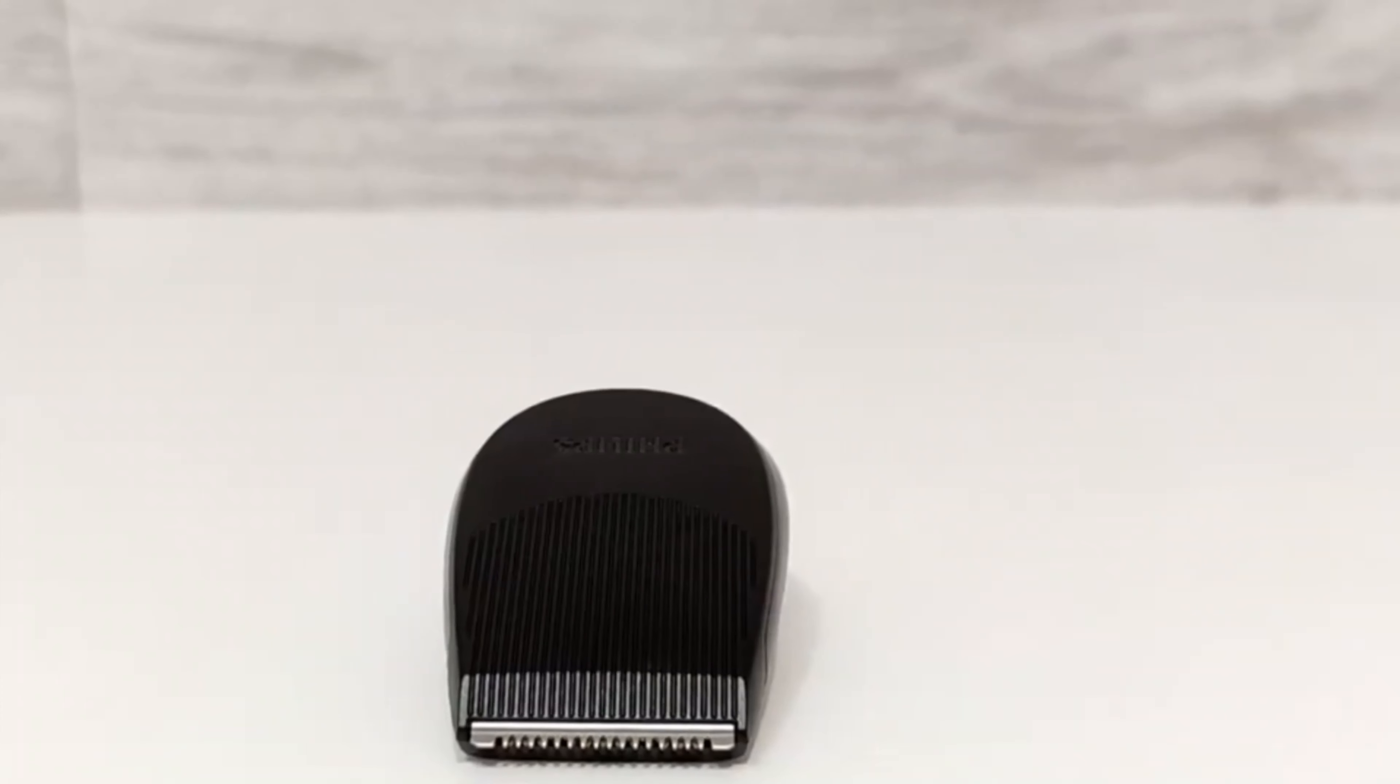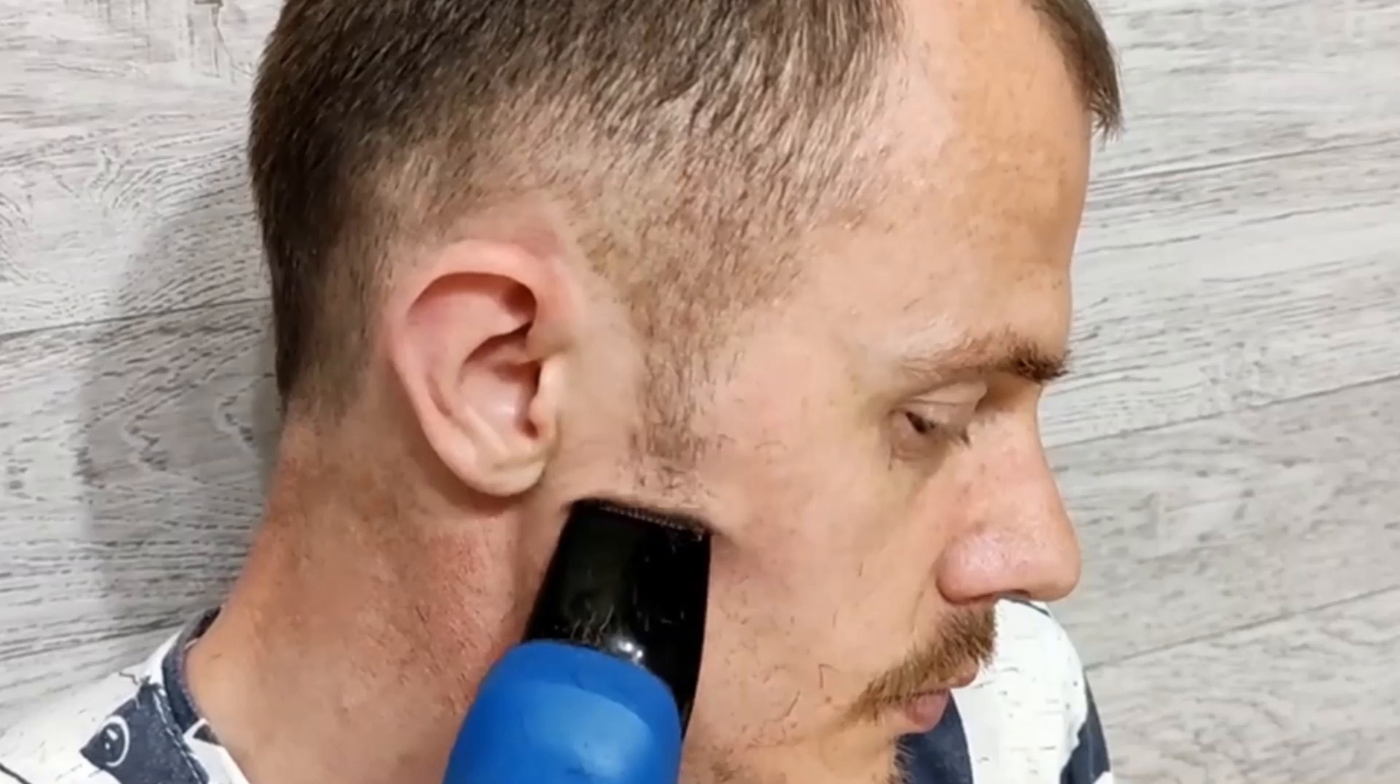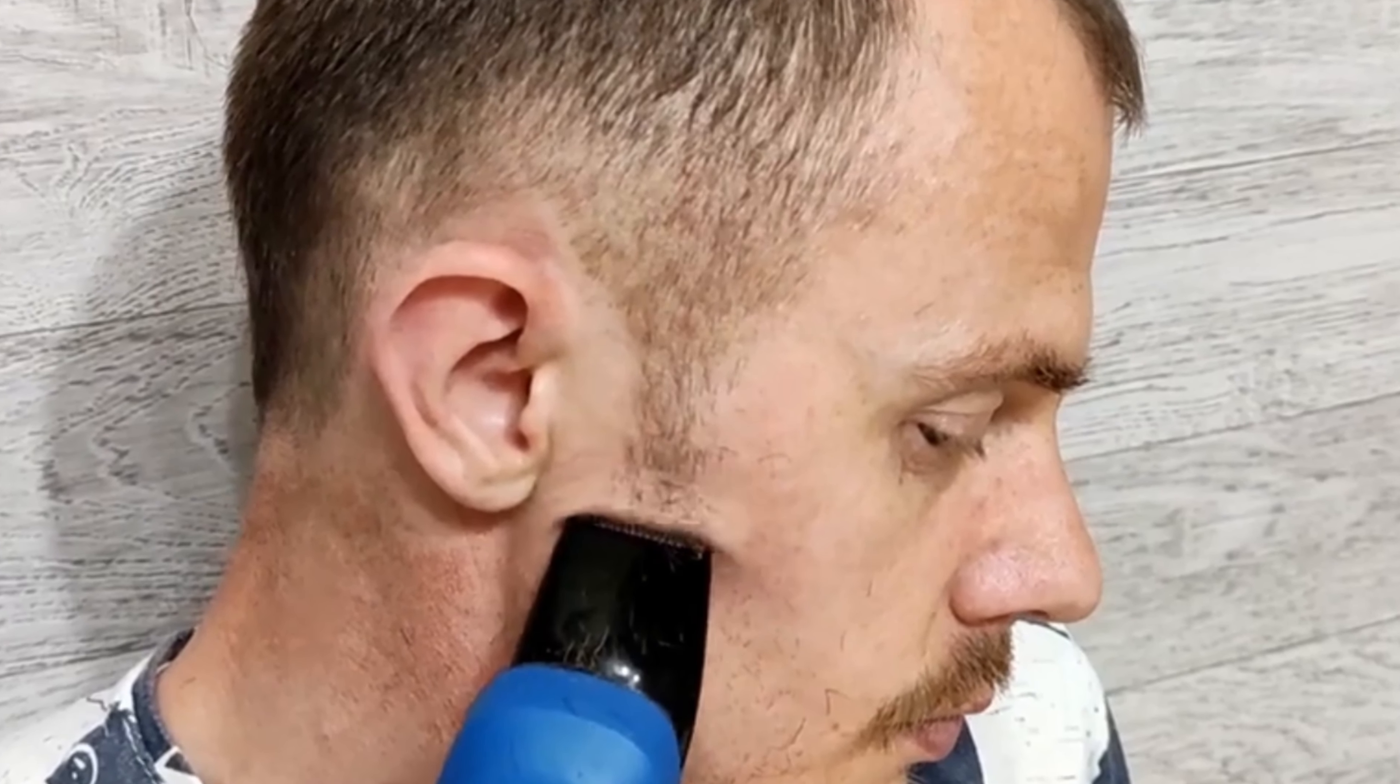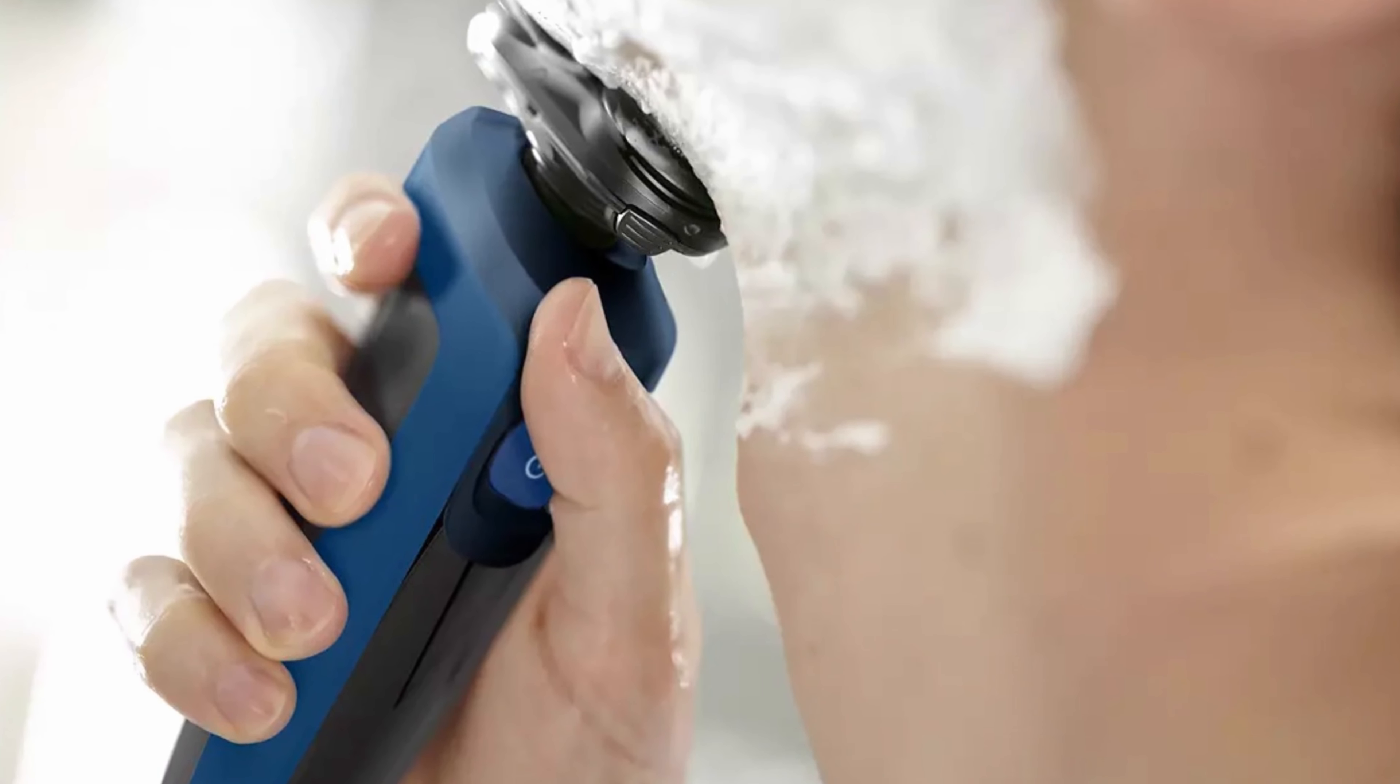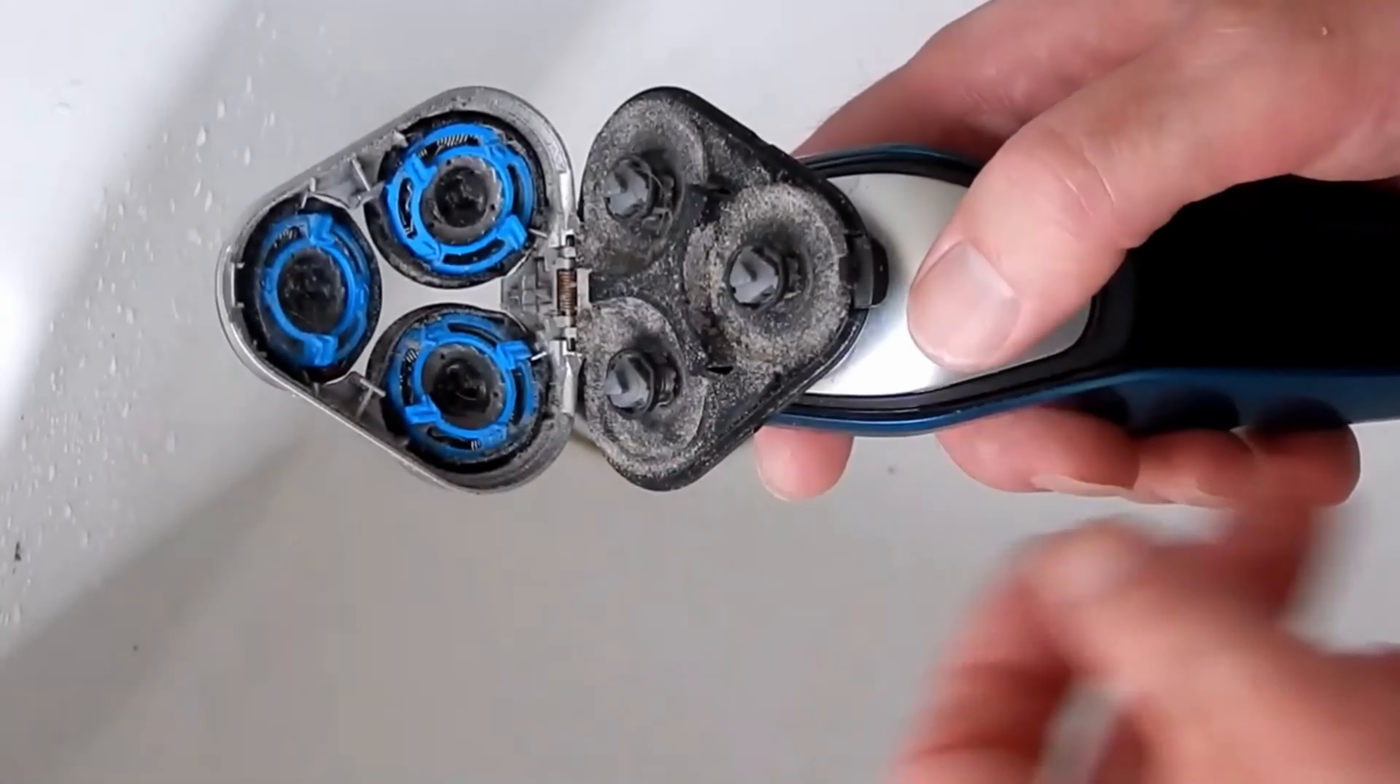Included is an attachable precision trimmer for sideburns and stylish finish of your mustache. You can use the shaver wet and dry. To clean it, all you have to do is flip the head open and rinse it out.